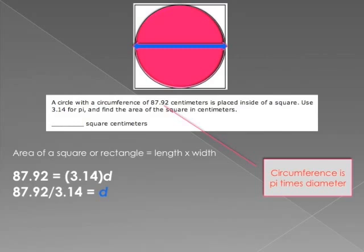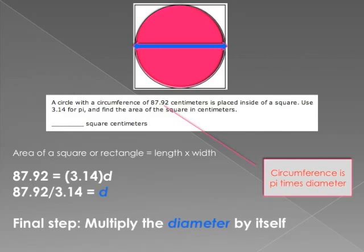The diameter is the distance across the circle. It just so happens that the distance across the circle is also the length of any side of that square. So to find the area of this square, multiply the diameter by itself.